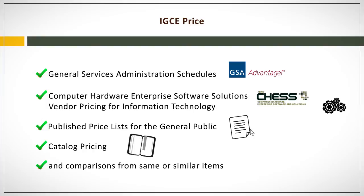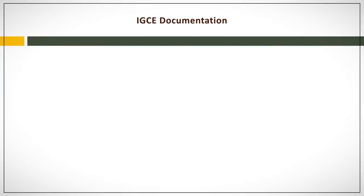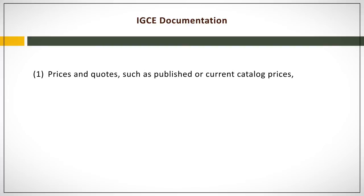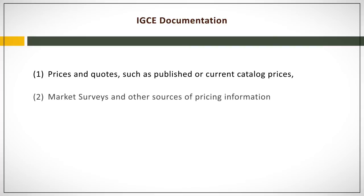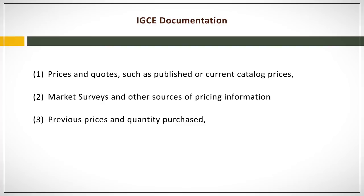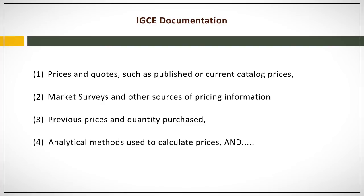For price information, the IGCE documentation may include prices and quotes such as published or current catalog prices, market surveys and other sources of pricing information, previous prices and quantity purchased, cost analytical methods used to calculate prices, and quantity of items to purchase.